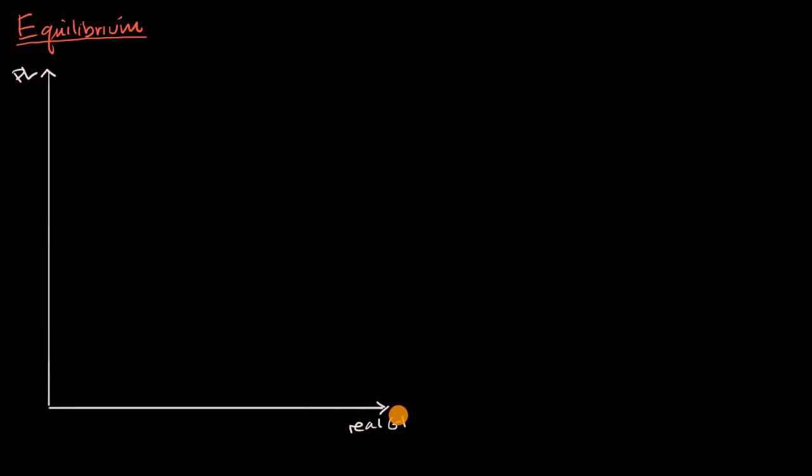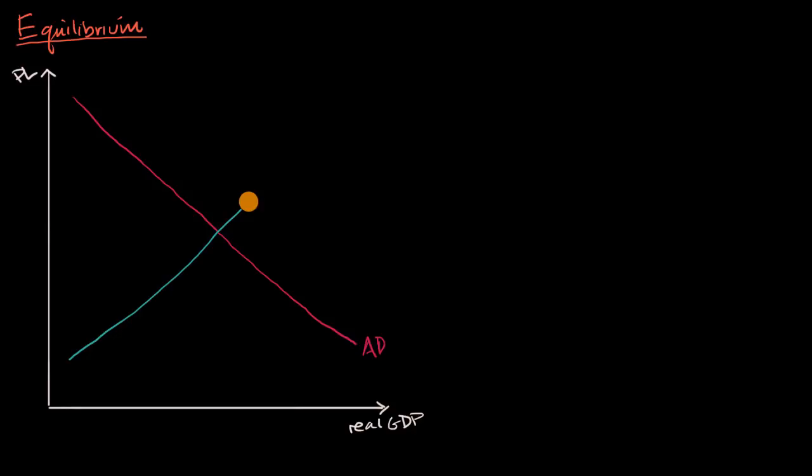Now I could draw an aggregate demand curve. In previous videos, we've talked at length about why economists like to model it as a downward sloping curve — but take all of these things with a grain of salt, there are a lot of assumptions baked in. And then I could also draw aggregate supply — this would be short run aggregate supply, an upward sloping curve. I'll call that short run aggregate supply one, because we might look at other potential aggregate supply curves.